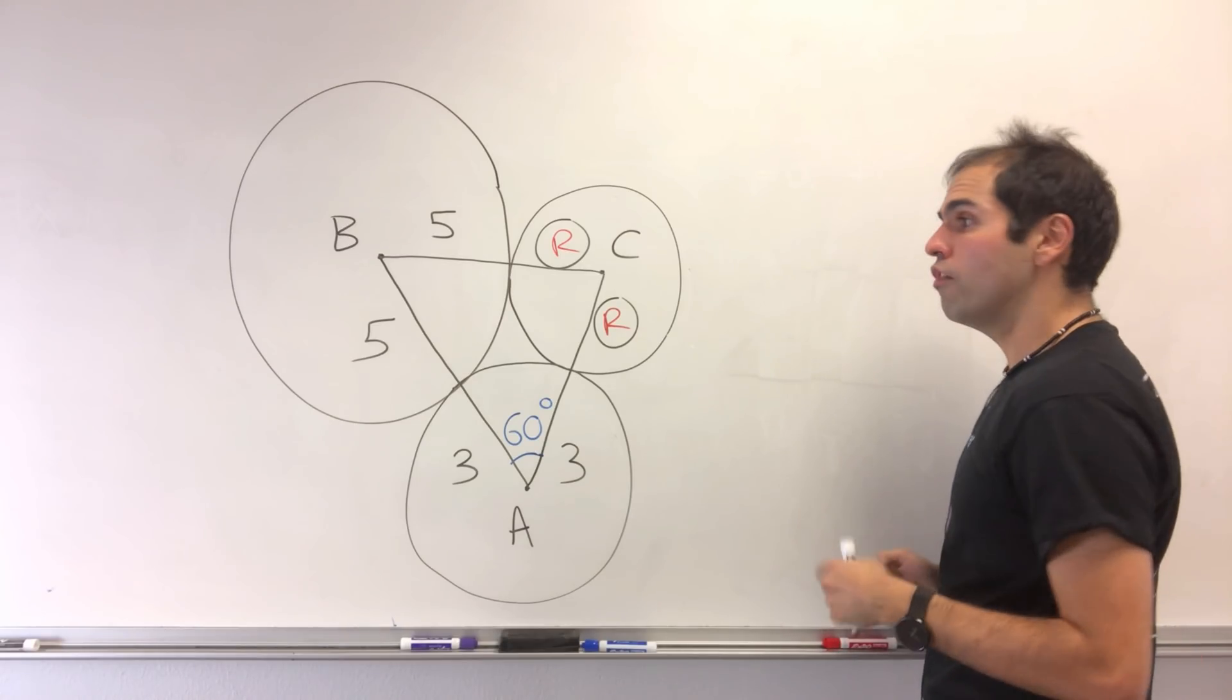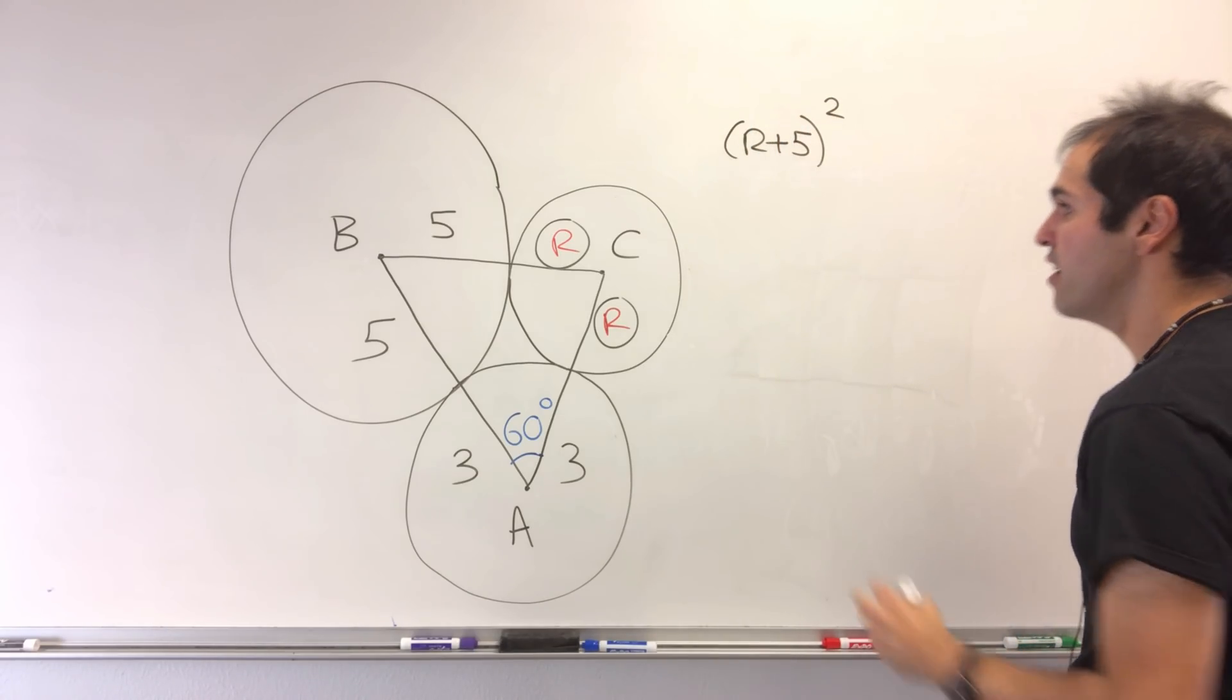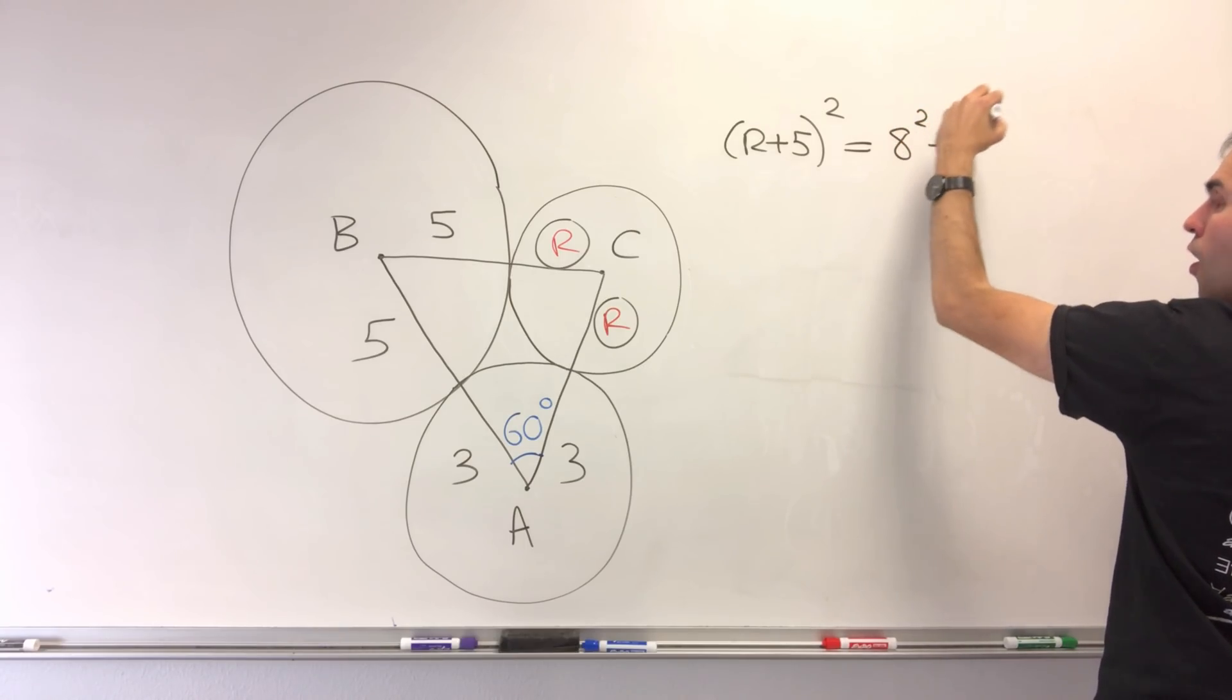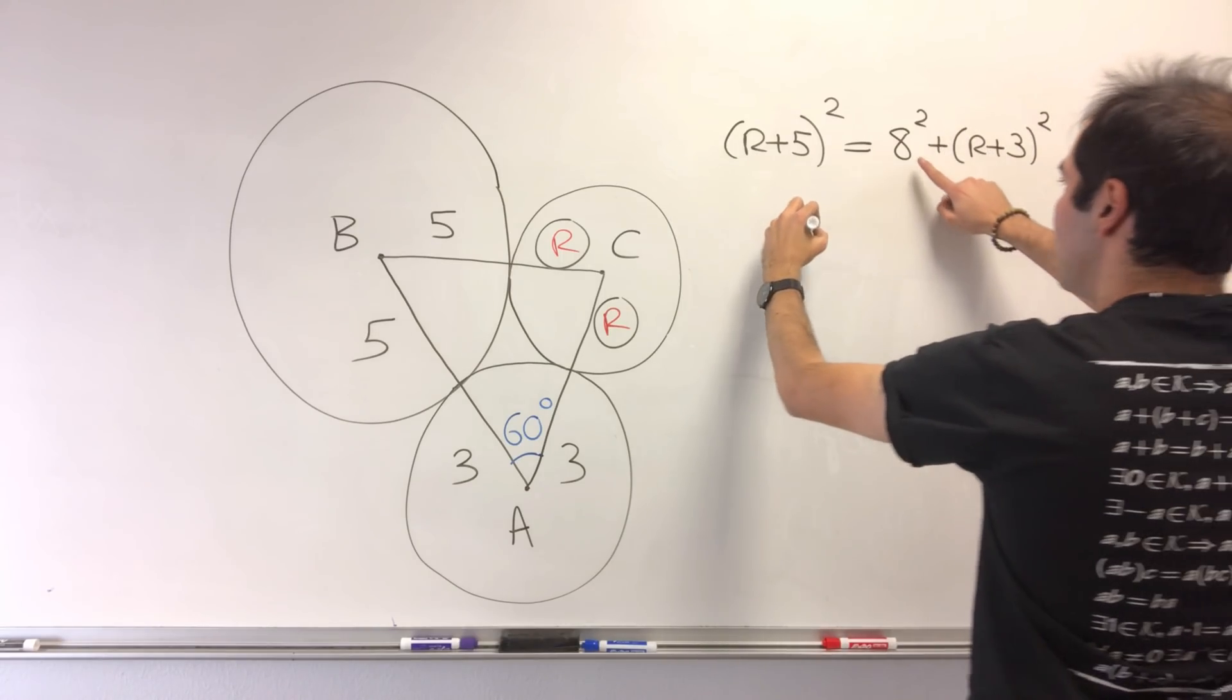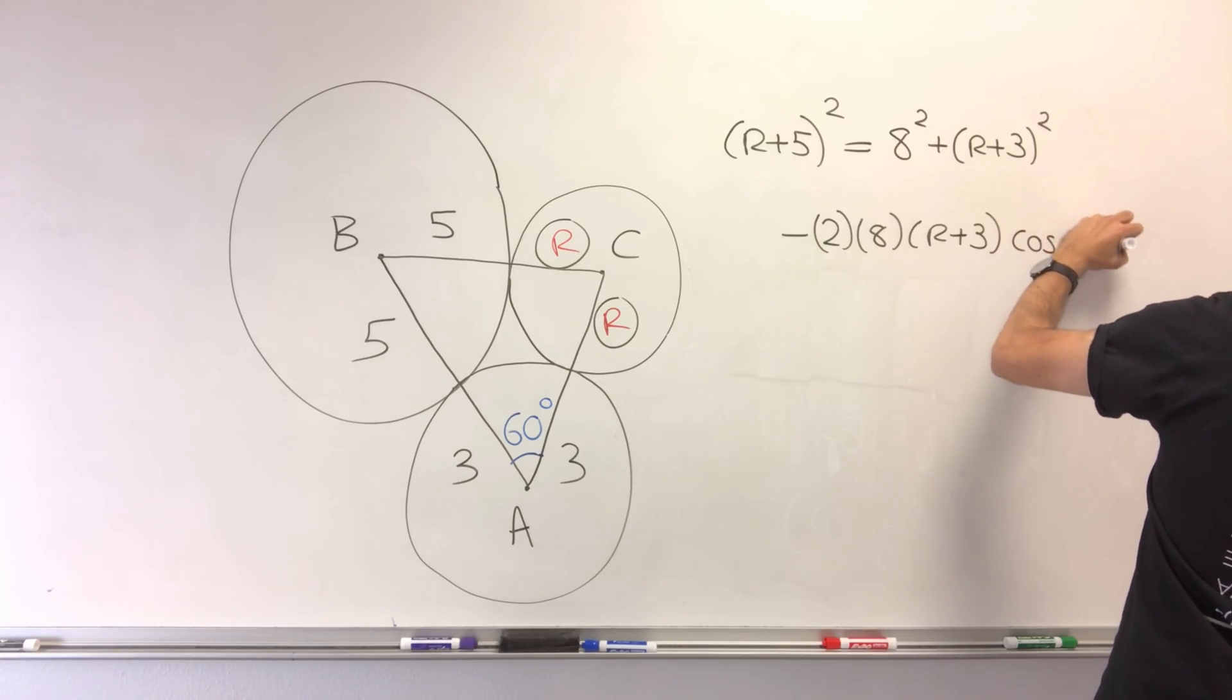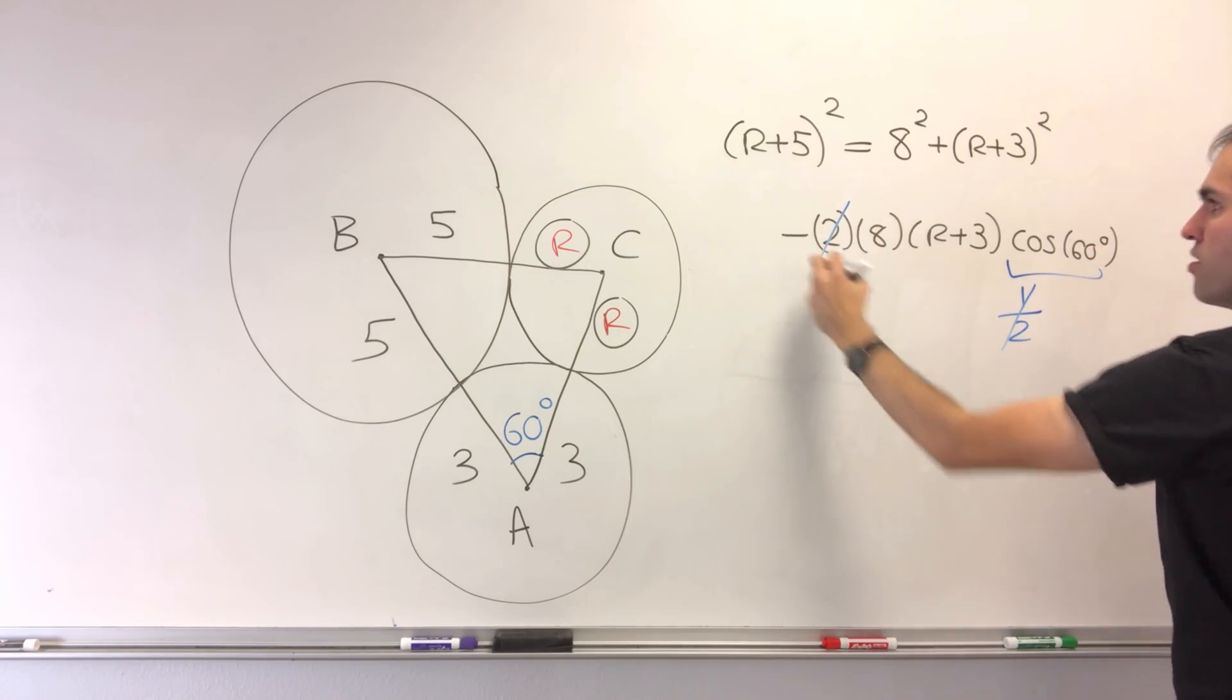This is a typical law of cosines problem. The square of the length of the third side, (r+5)², equals 8² + (r+3)² minus a correction term: 2 times 8 times (r+3) times cosine of 60 degrees. But cosine of 60 degrees is just 1/2, which cancels out with the 2.